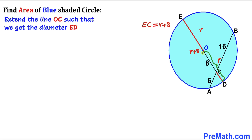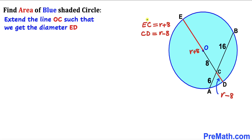Now let's focus on the other radius OD. We know OC is 8, so the tiny length CD is going to be r minus 8. So we've figured out EC equals r plus 8 and CD equals r minus 8.